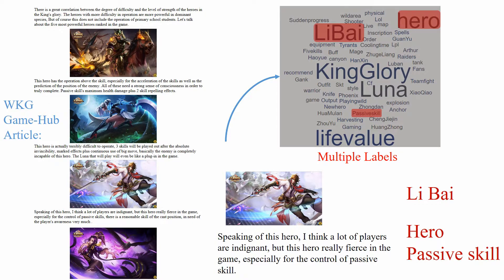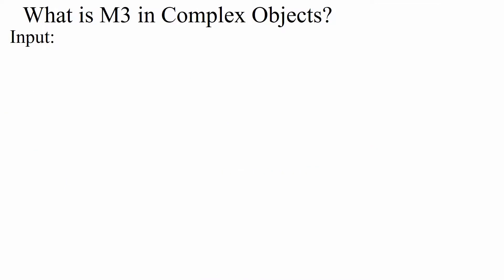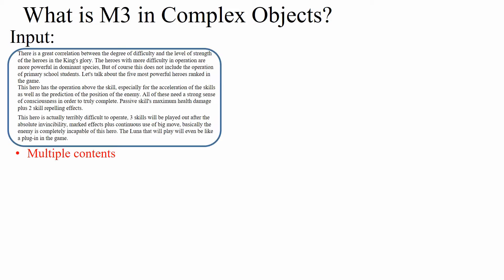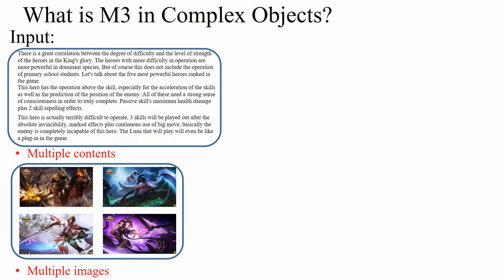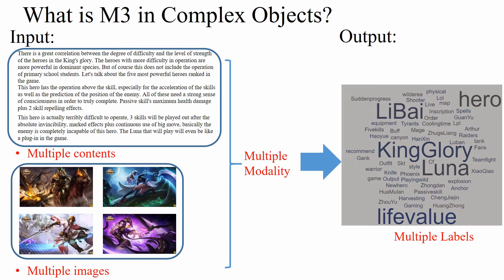In the framework, what is the M3 in complex objects? In detail, in the complex article example, we have multiple contents and multiple images as the multimodal multi-instance input, while we wish to predict the multiple labels accurately using the M3 framework.